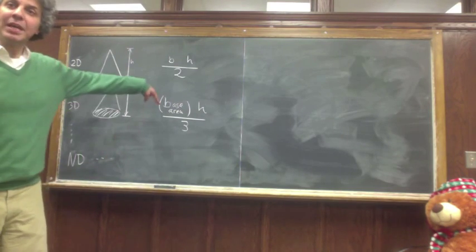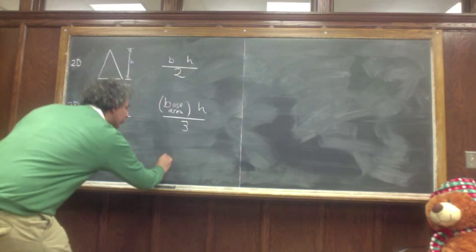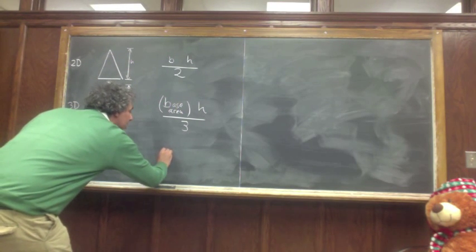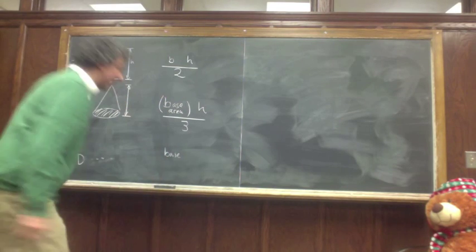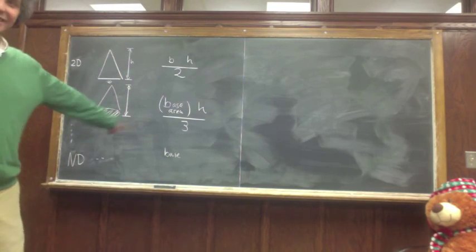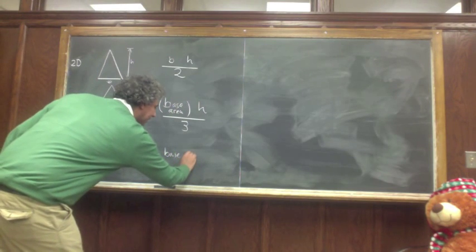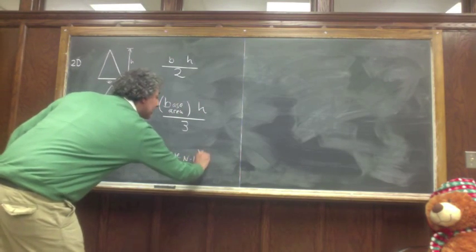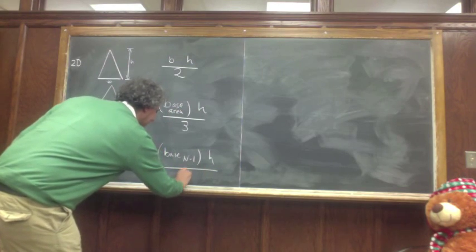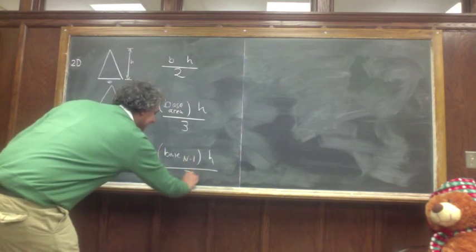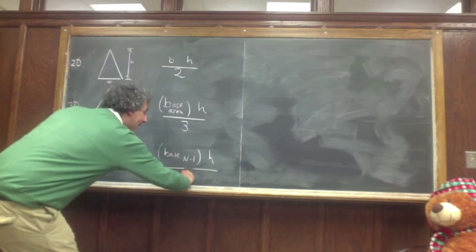And we made an argument that in n dimensions this would be the base — the volume in n minus 1 dimensions, base in n minus 1 — times height, divided by d or n because we are in n dimensions.